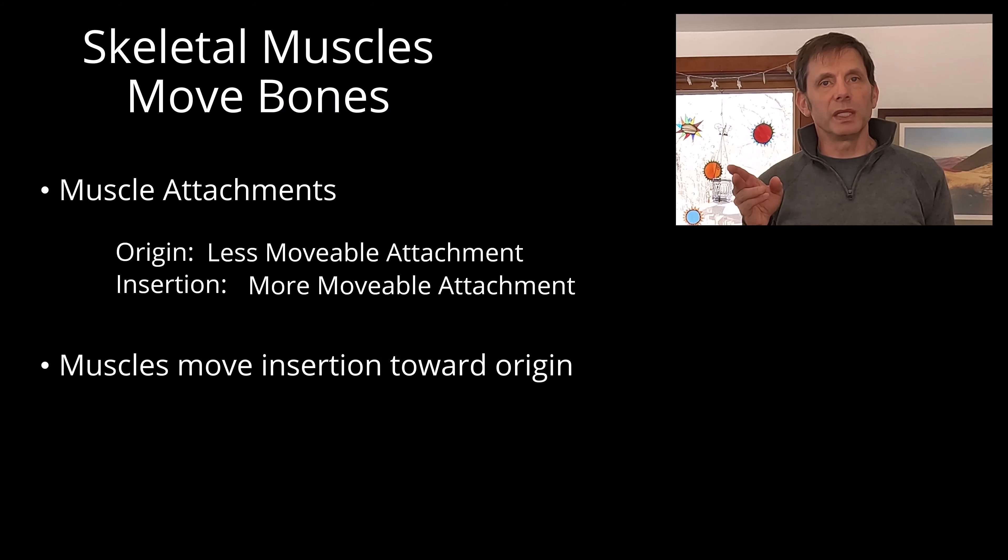Muscles are the motors that cause the movement. Joints have structures that determine what types of movement can occur.